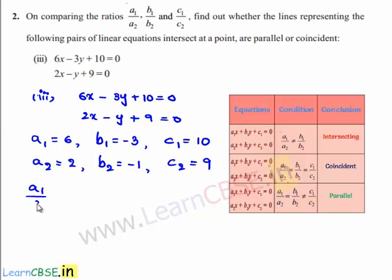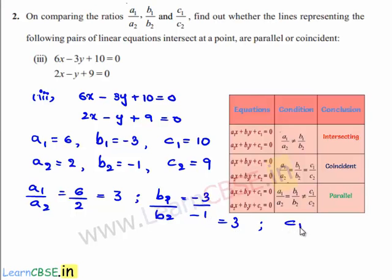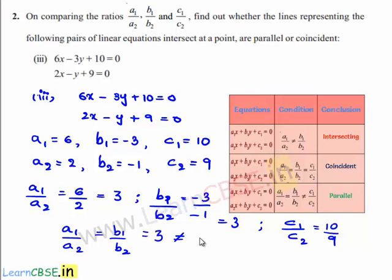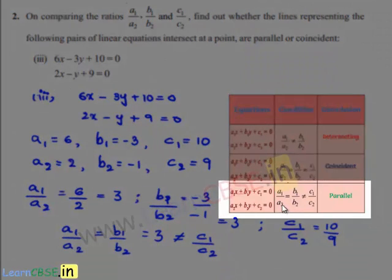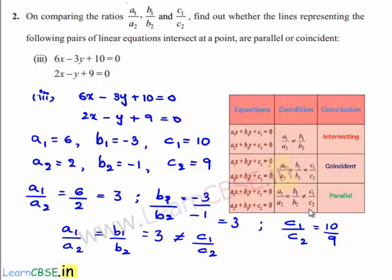So a1 by a2 is equal to 6 divided by 2, which is nothing but 3. In the similar manner, b1 by b2 is equal to minus 3 divided by minus 1, which is nothing but 3. And c1 by c2 is equal to 10 divided by 9. The values of a1 by a2 and b1 by b2 are equal to 3, but this is not equal to c1 by c2. From the third condition, a1 by a2 is equal to b1 by b2, which is not equal to c1 by c2, so the given set of linear equations represent parallel lines.